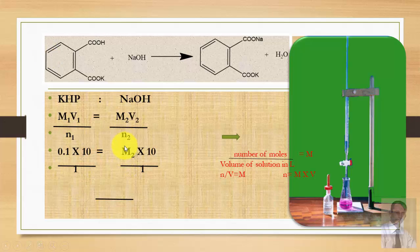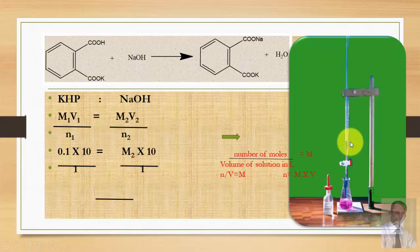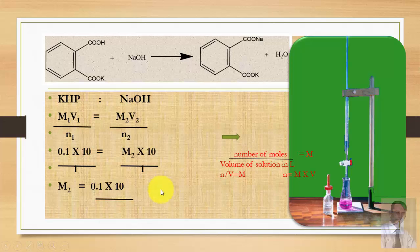For NaOH, we do not know its exact molarity — although we prepared a 0.1 molar solution, it is not exact because sodium hydroxide can absorb moisture. V2 is the volume of NaOH solution consumed during titration. The only unknown in the equation is M2 — the molarity of NaOH. After calculation, it comes out to be 0.1 molar, confirming that your sodium hydroxide solution is now standardized.